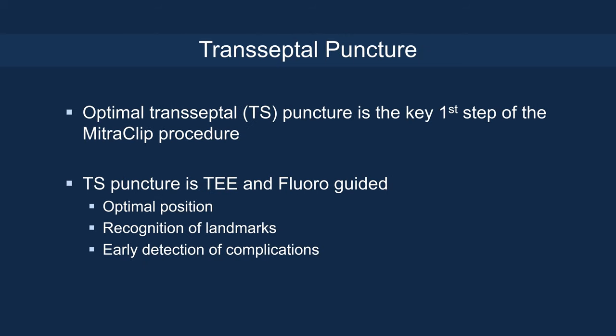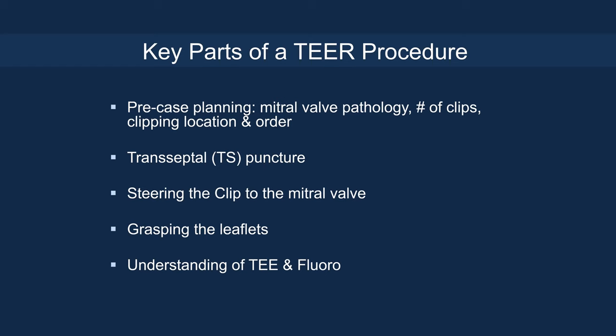Optimal transeptal puncture is the key first step of a mitral procedure or even transcatheter mitral valve replacement procedures. The transeptal puncture is TEE and fluoroscopy guided to ensure optimal position, recognize the landmarks, and enable early detection of complications. The key parts of a transcatheter edge-to-edge repair procedure include detailed pre-case planning on mitral pathology, number of clips, clipping location and order, the transeptal puncture, steering the clip to the mitral valve, leaflet grasping, and understanding of TEE and fluoroscopy.